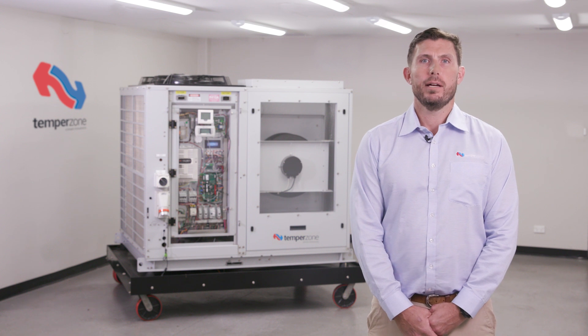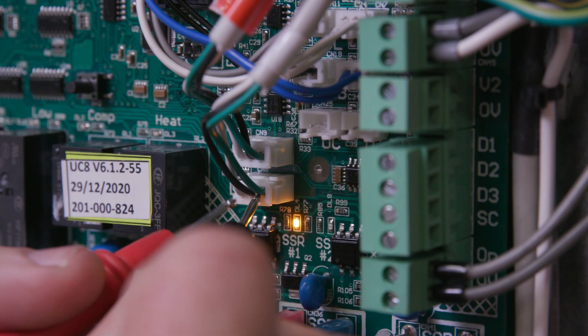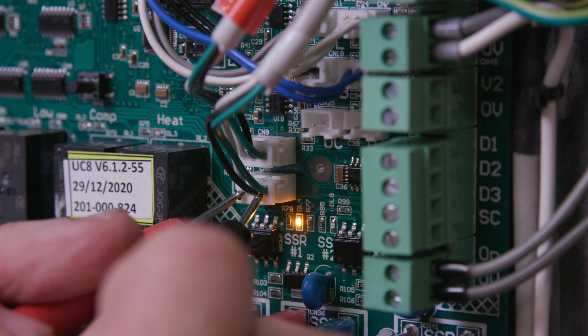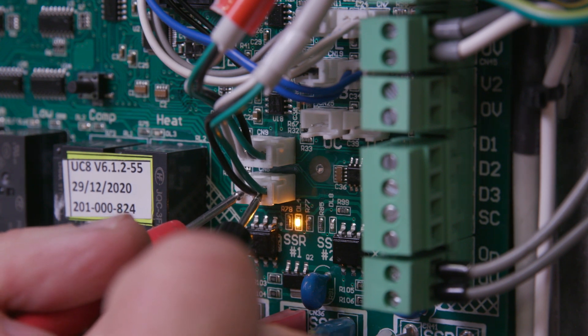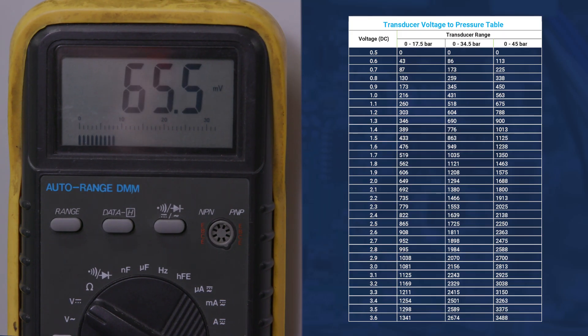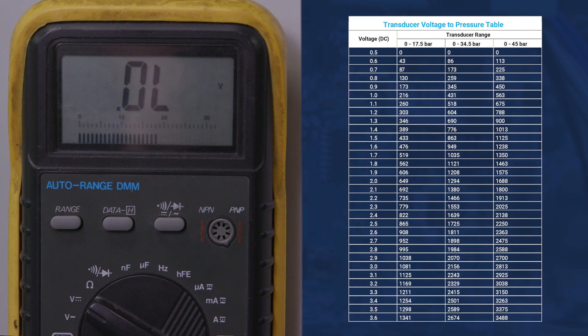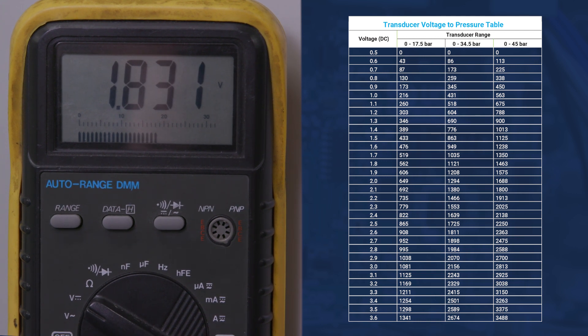Once 5 volt DC power supply is confirmed, test between the white and green wire to measure the transducer voltage output. Cross reference this voltage to pressure on the transducer voltage table supplied in the latest version 8 of the TempoZone service training manual.